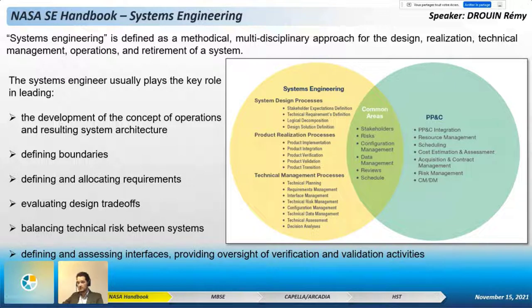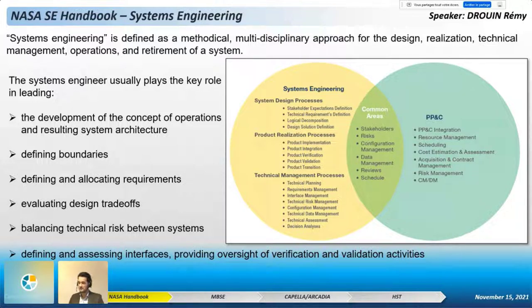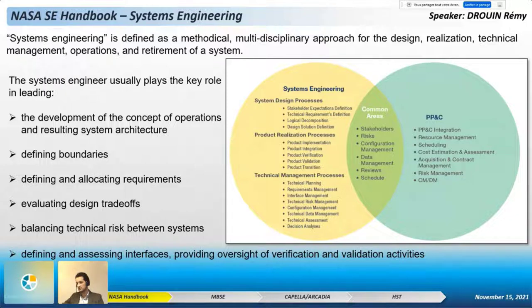When talking about system engineering, we have to talk about the system engineer. The exact role and responsibility of the system engineer may change from project to project depending on the size and complexity, and from phase to phase of the life cycle. For large projects there may be one or more system engineers; for small projects the project manager may sometimes perform these practices. The system engineer usually plays a key role in leading the development of the concept of operations and resulting system architecture, defining boundaries, allocating requirements, evaluating design trade-offs, balancing technical risk, defining and assessing interfaces, and providing oversight of verification and validation activities.